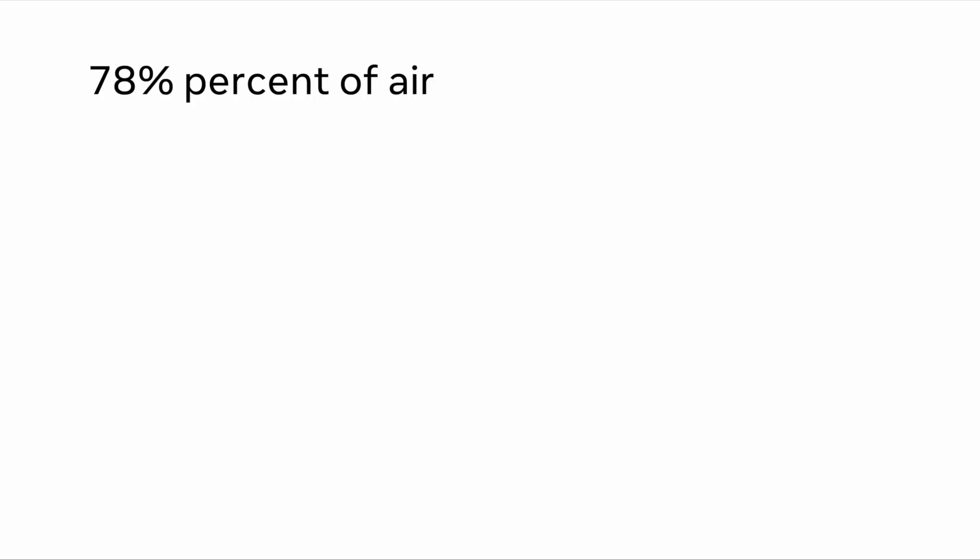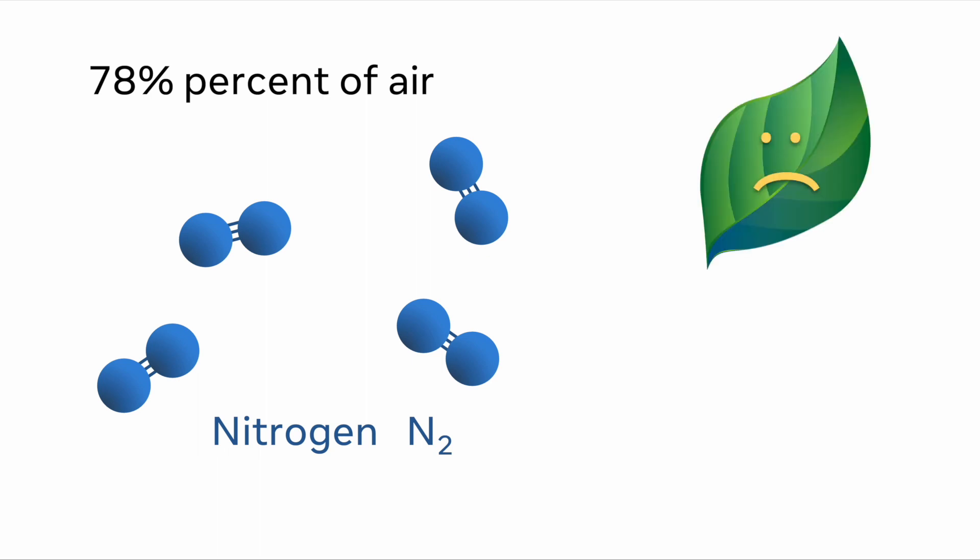It turns out that 78% of the air is actually nitrogen. The problem is that these nitrogen molecules are really tightly bonded together, which makes it hard for plants to utilize. So what we need to figure out how to do is break apart those nitrogen molecules so that we can add hydrogen to create ammonia fertilizer.